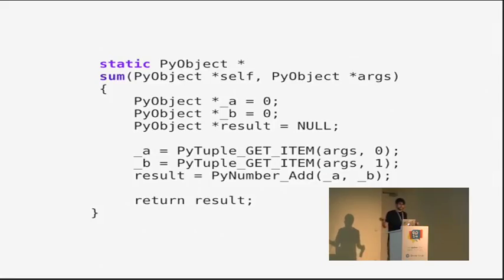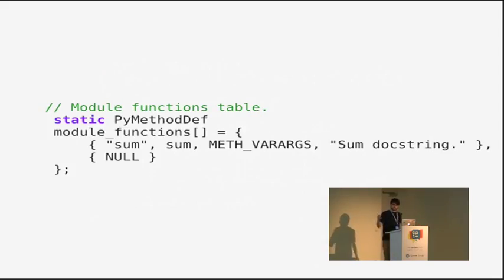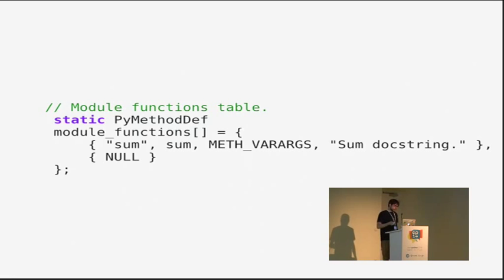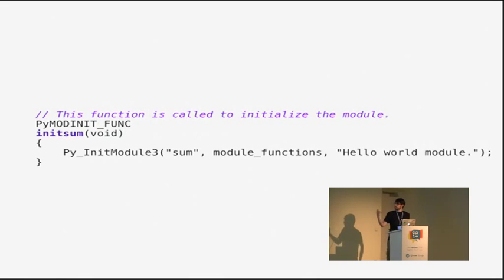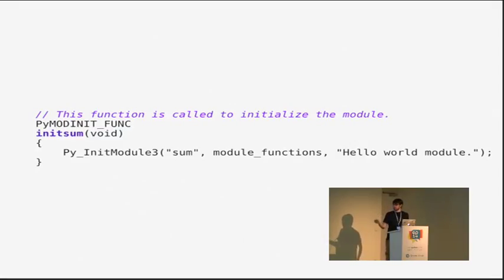Note this is a toy example — if you pass only one argument it will probably break because there's no argument count check. Then we define the public methods the module will expose: a list with the method name, a pointer to the function, some flags, and a docstring. Finally, we define the init function that is called the first time the module is imported, which initializes the module by providing its name, public functions, and a docstring.